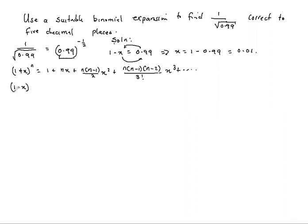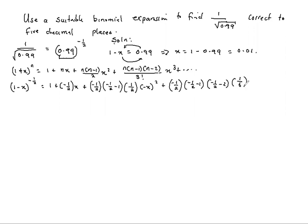Now what we have is 1 minus x to the power n. In this case n is negative half. So we have 1 plus negative half times negative x, plus negative half times negative half minus 1, which will be written as 1 over 2, and then negative x squared, plus negative half times negative half minus 1 times negative half minus 2, and the 3 factorial down is the same as 1 over 6, then to the power negative x to the power 3.